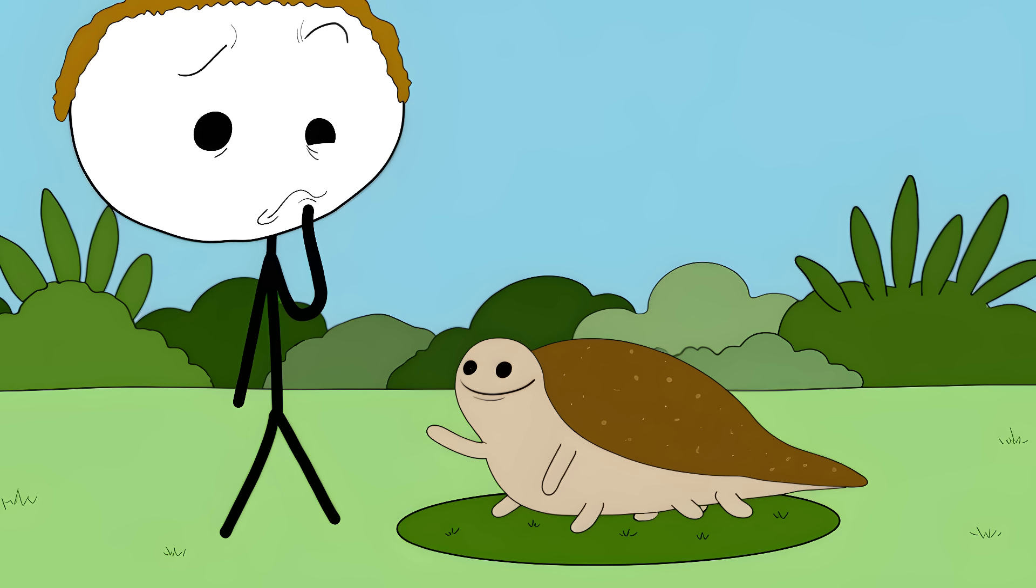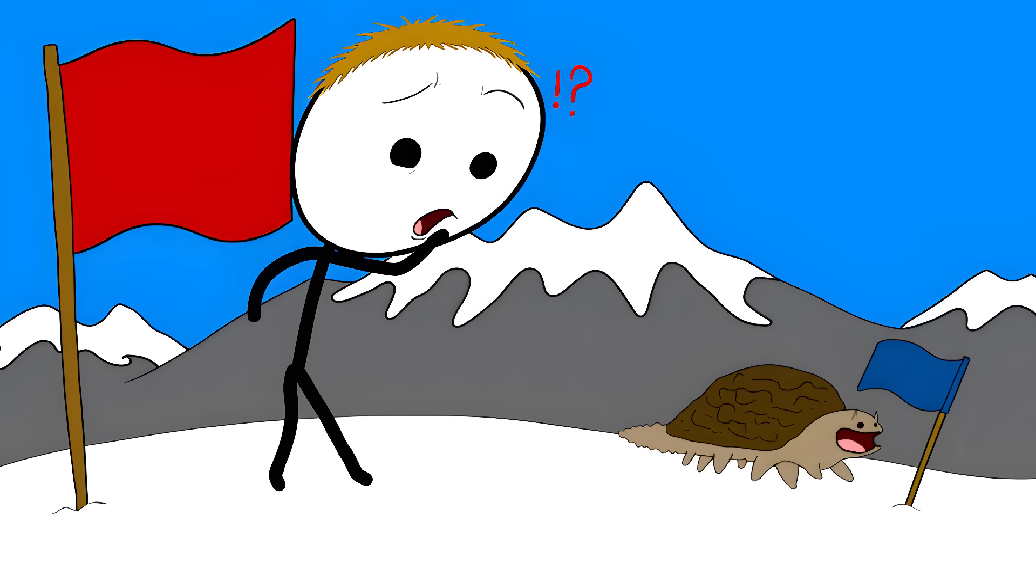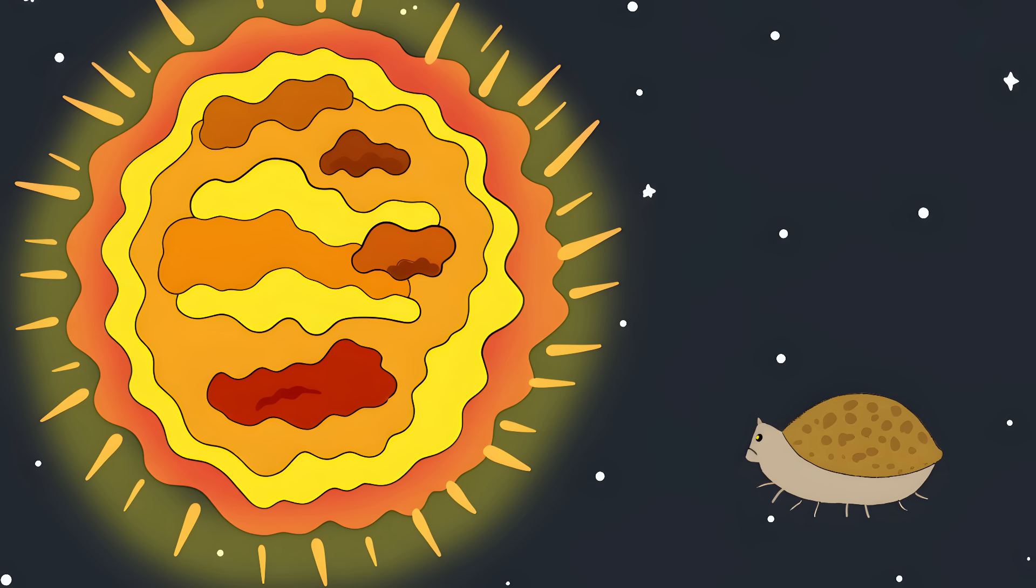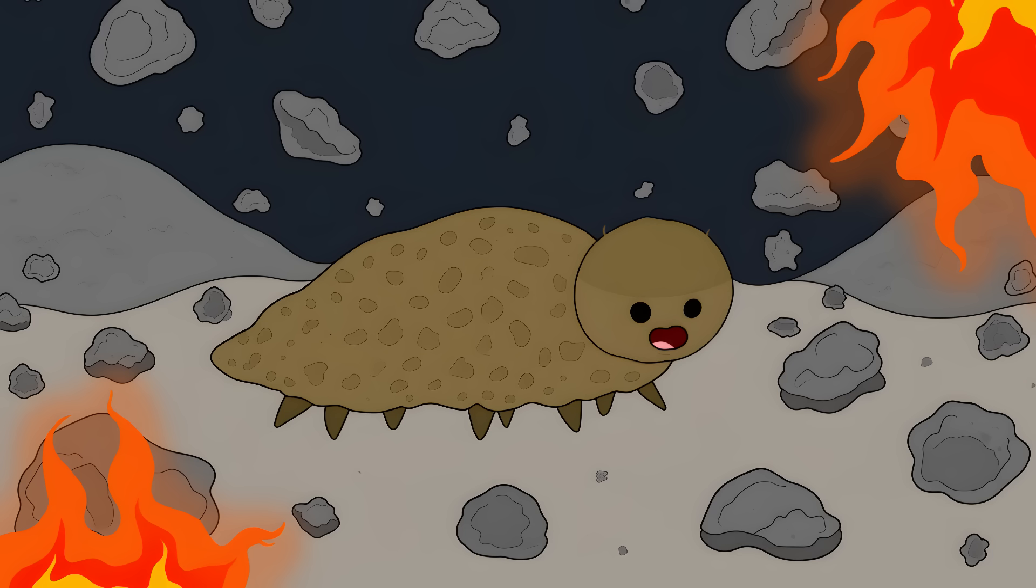These unkillable show-offs are everywhere—in your backyard moss, in puddles, on beaches, even on Mount Everest. Scientists think tardigrades will outlive humanity. The only thing that might kill them is if the sun explodes, and even then I wouldn't bet against them.